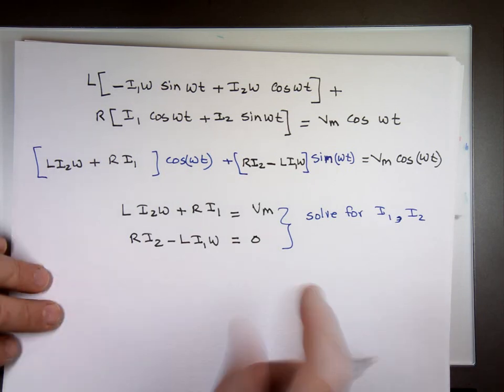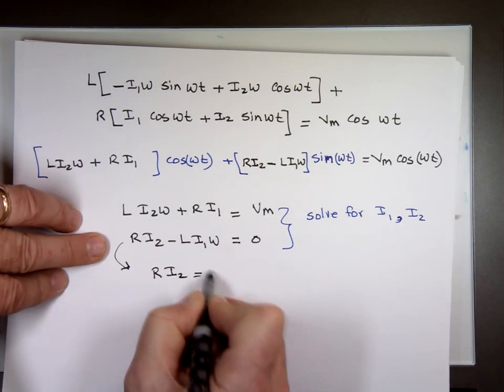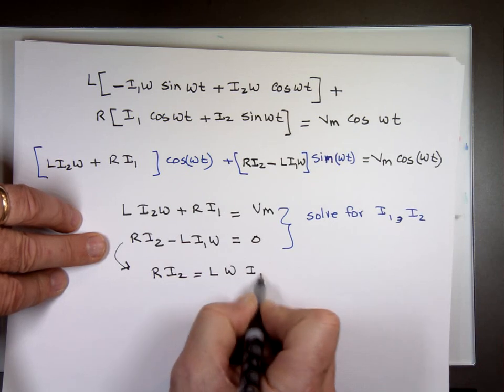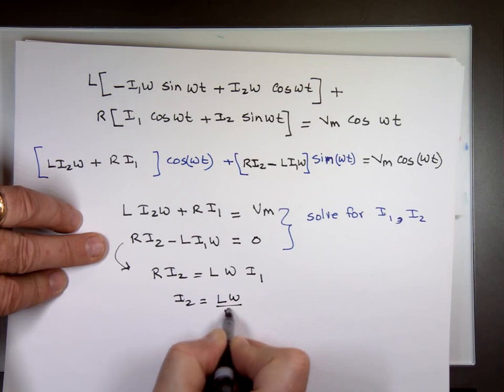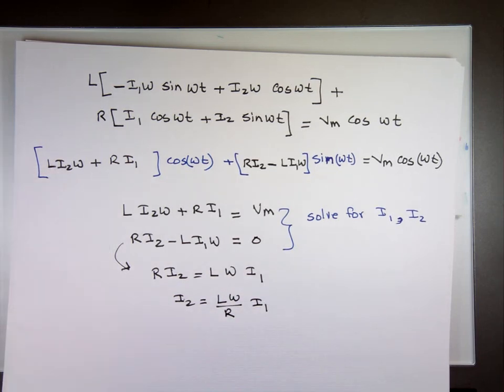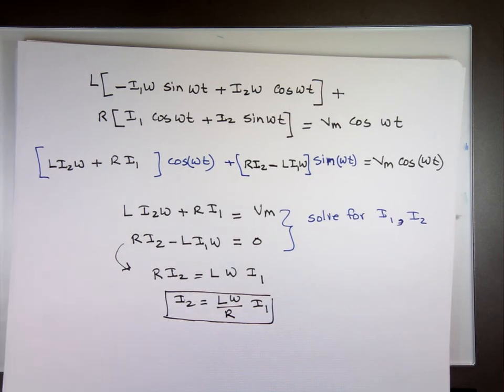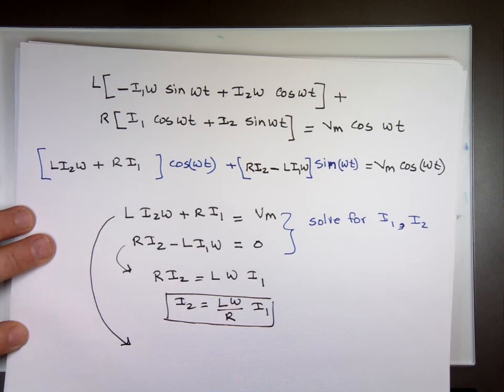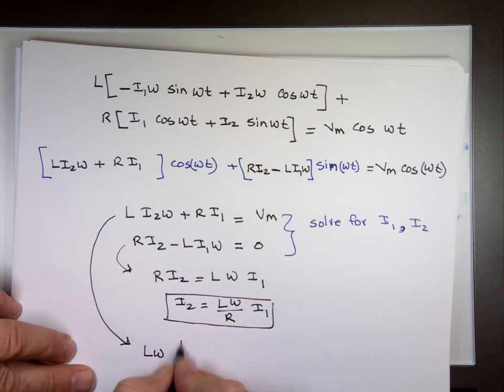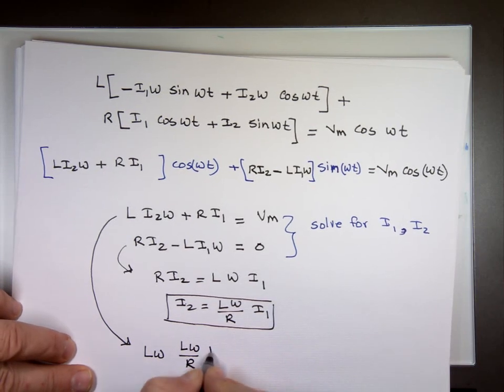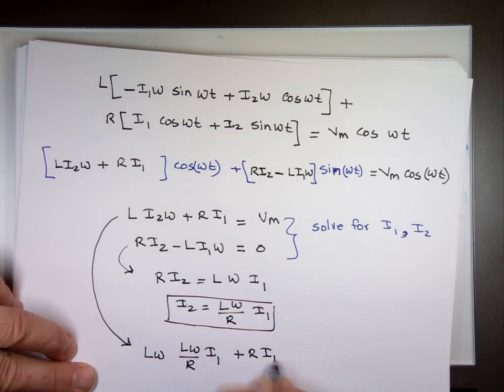Now you can use substitution if you want to. This equation says R times I sub 2 equals Lω times I sub 1. Divide by R, I sub 2 equals what? Lω over R times I sub 1. Bring that equation down. Lω times I sub 2. Instead of I sub 2, let me put what? Lω over R, I sub 1, plus R times I sub 1 equals Vm.